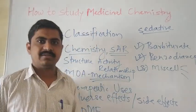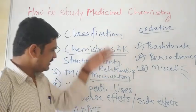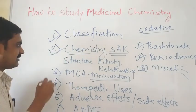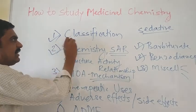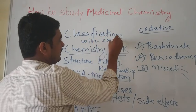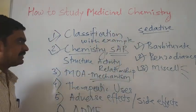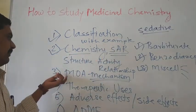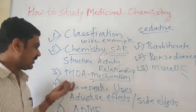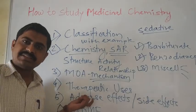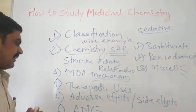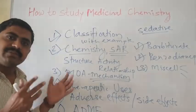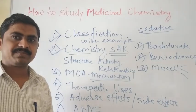So this is the sequence of how to study medicinal chemistry: first, classification with examples; second, basic chemistry and structure-activity relationship; third, mechanism of action; fourth, therapeutic uses; fifth, adverse effects; and sixth, ADME — absorption, distribution, metabolism, and excretion. This is the way to study medicinal chemistry. Thank you all.